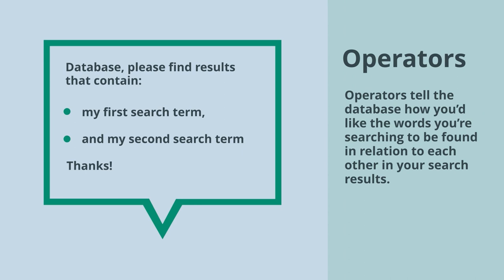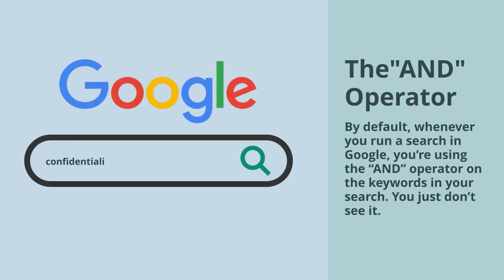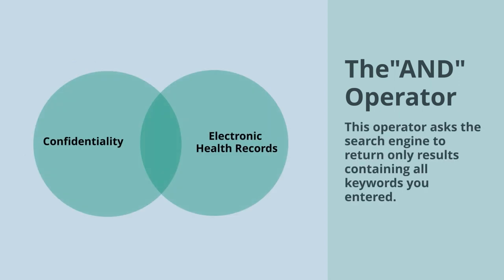Operators tell the database how you'd like the words you're searching to be found in relation to each other in your search results. By default, whenever you run a search in Google, you're using the AND operator on the keywords in your search — you just don't see it. This operator asks the search engine to return only results containing all keywords you entered. So in the image, that's where the two circles overlap.